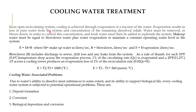In an open recirculating system, cooling is achieved through evaporation of a fraction of the water when it is distributed through distributor nozzles. This evaporation results in loss of pure water and concentration of dissolved solids (TDS) in the cold basin. Water must be blown down to control TDS concentration, and makeup water must be added to replenish the system. Makeup water equals blowdown plus evaporated water to maintain a constant operating level.